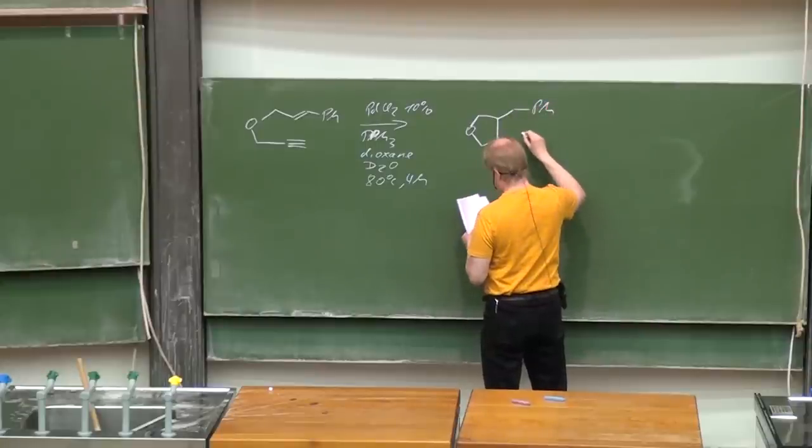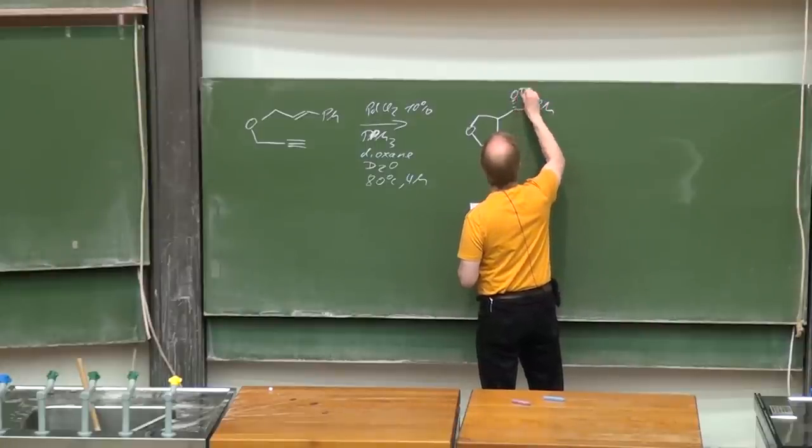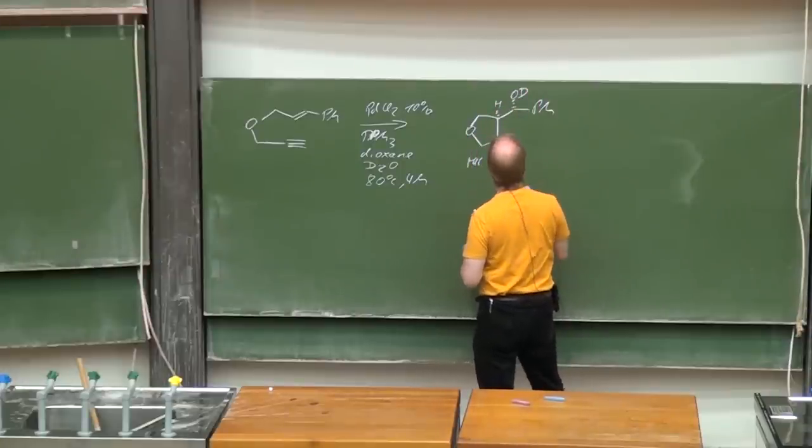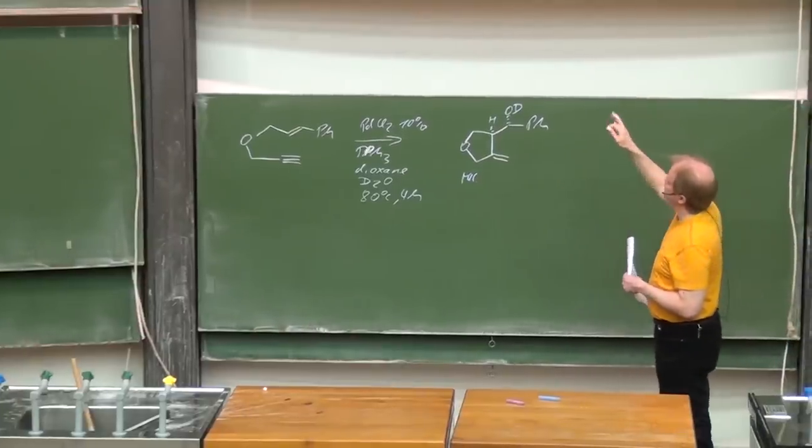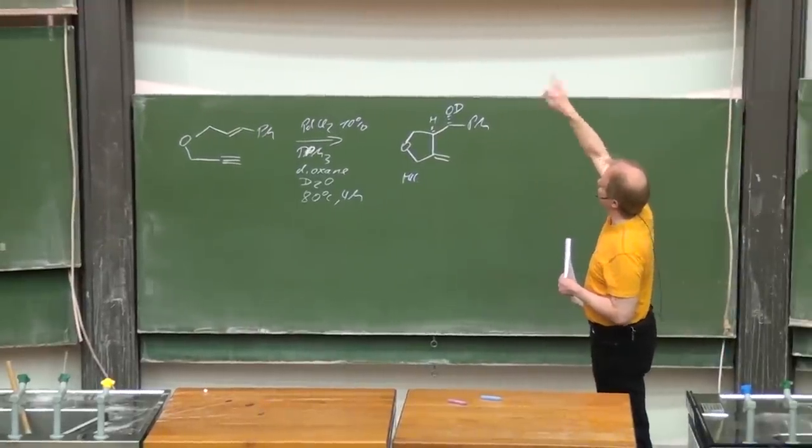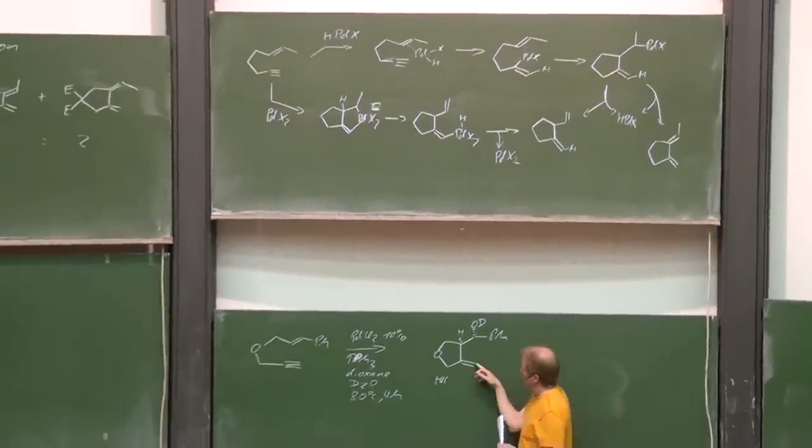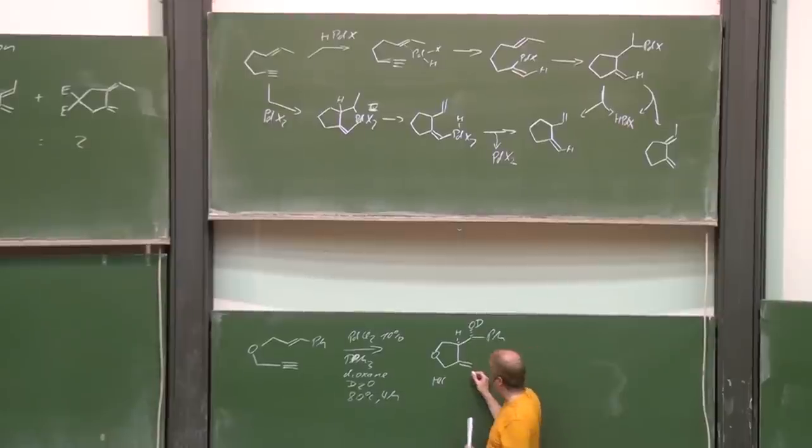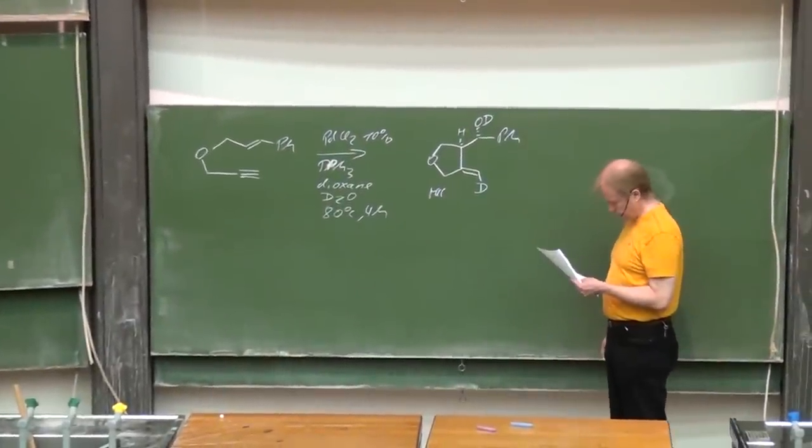In connection with the Wacker process, we will discuss in detail tomorrow. The D2O is added and finally resulting in, well of course racemic, this product. And what is interesting: if we discuss or have those mechanisms in mind, then the second deuterium should be here at this position, but actually it was found to be located here.